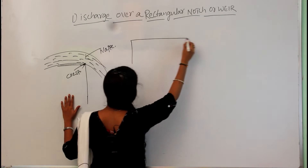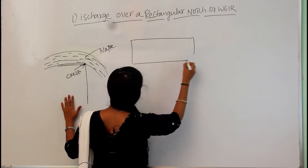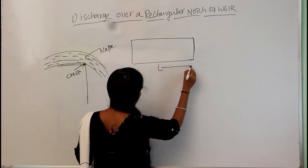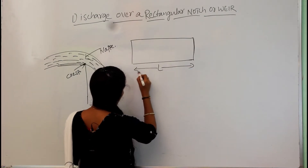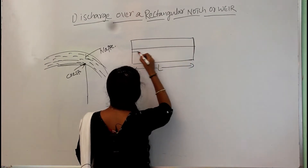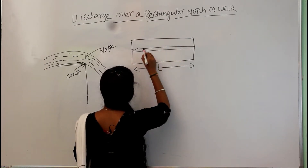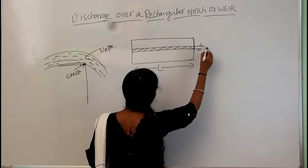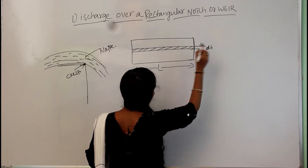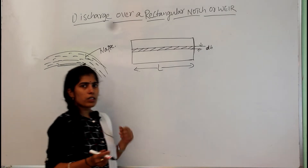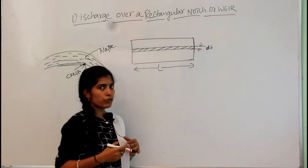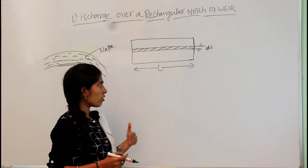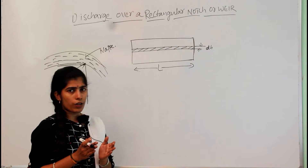Now I am deriving the discharge equation for this rectangular weir. I am considering the rectangular shape — this is the rectangular weir or notch having a length L. To derive the discharge equation, first of all I am considering a small strip with a thickness of dh. The reason we consider a small strip is that it is very complex to derive the discharge equation for the entire notch directly.